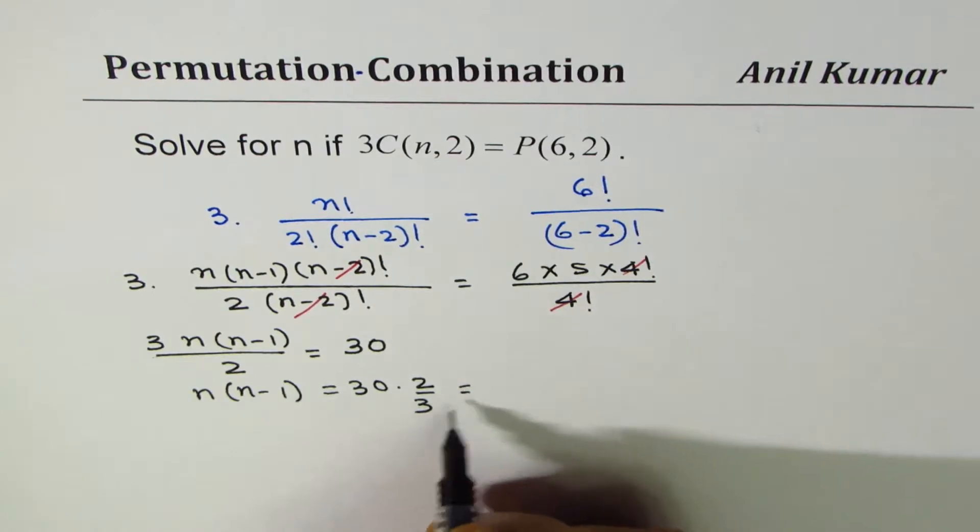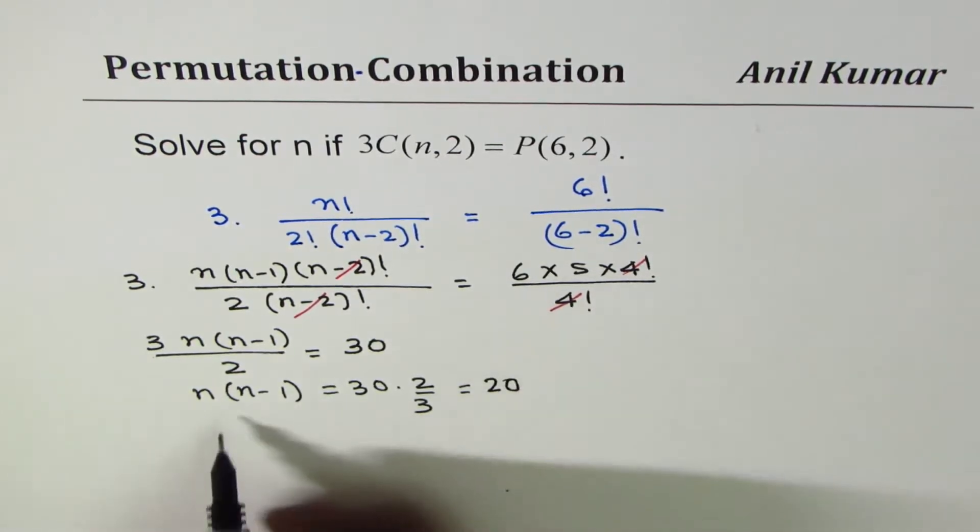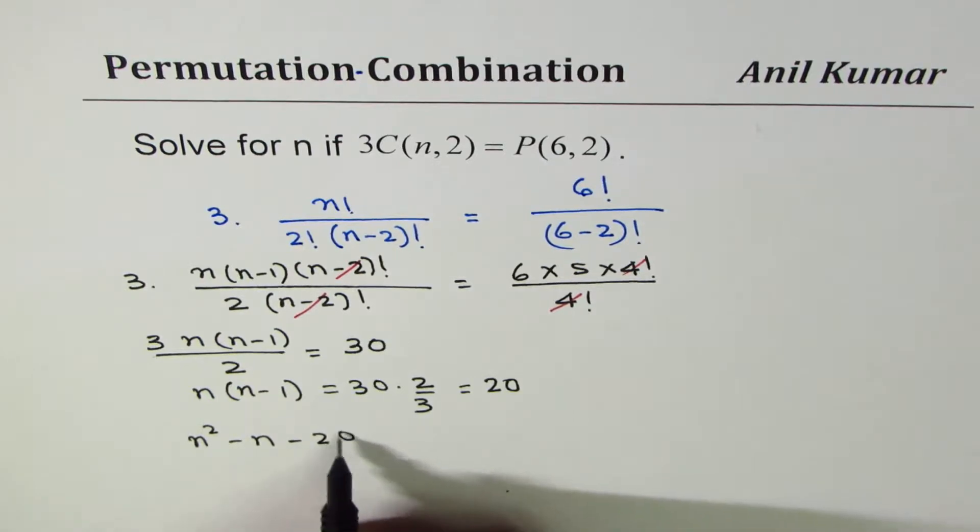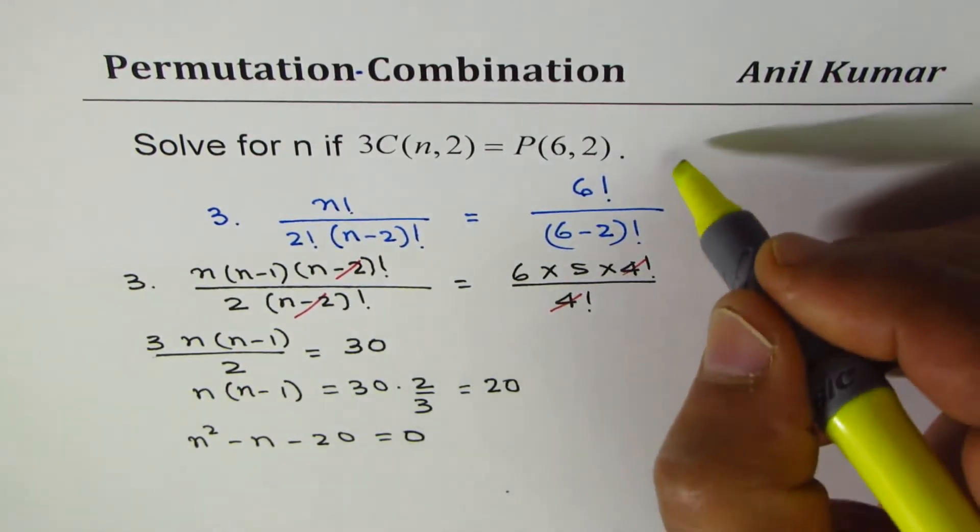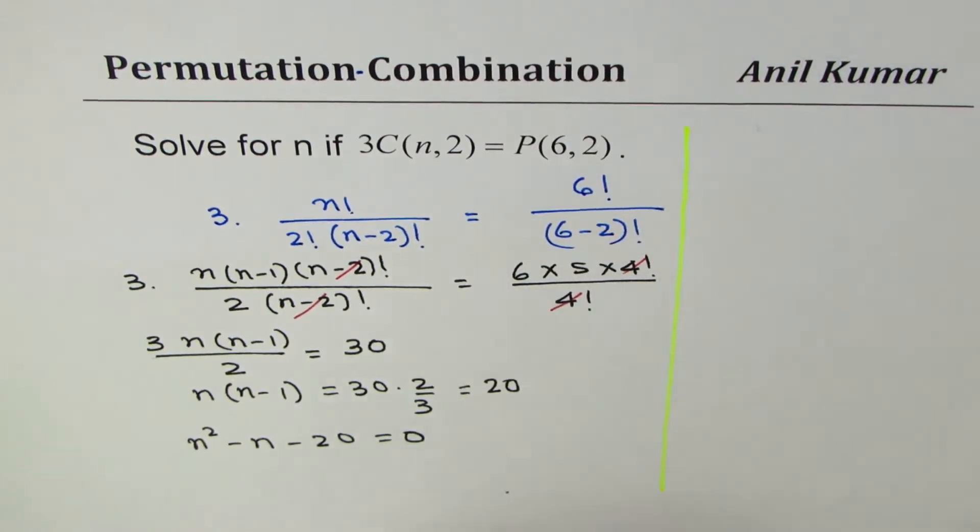Bringing the terms together and opening this bracket we get n² - n - 20 = 0, so we need to solve this quadratic equation to find the value of n.